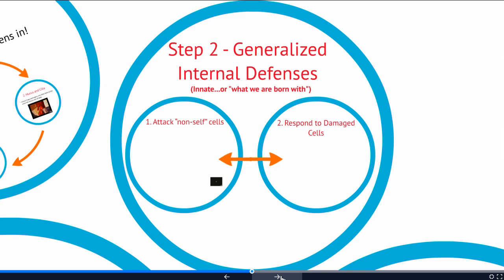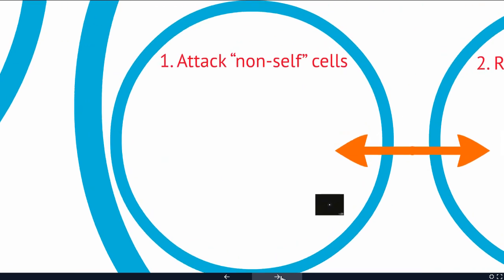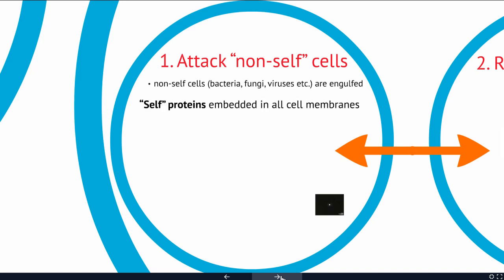We describe the generalized internal defenses as innate, meaning you're born with these — your body can do this right away. We have two parts to it. First, we can attack all non-self cells. Every cell membrane in your body has unique proteins that are unique to you, and your immune system uses those as an ID to determine which cells belong and which ones don't.